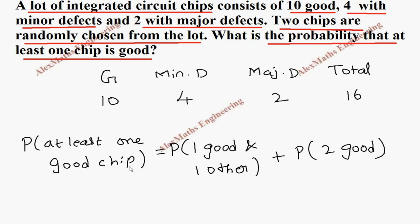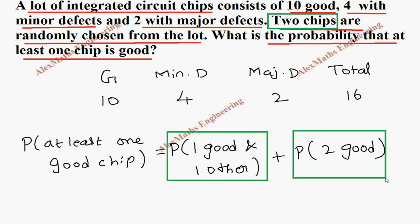This is the meaning of at least one good chip - at least one means one or more than one. But here we are going to take only two chips at a time. So out of the two, one good and one other is one possibility, or both good is another possibility.